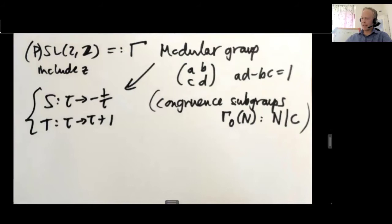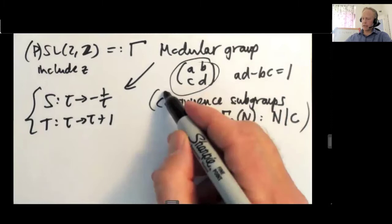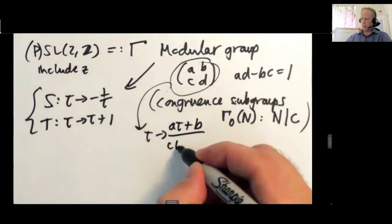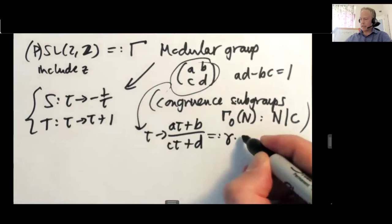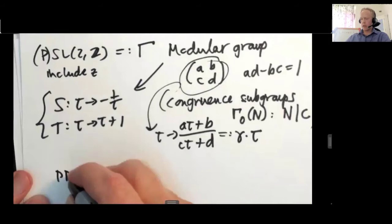So you can build up any SL2Z matrix by these transformations. And this transformation acts as a tau plus b over c tau plus d. Sometimes this is written as gamma times tau, even though this is not a matrix multiplication. This is just a number. So this is just a symbol for that. All right.